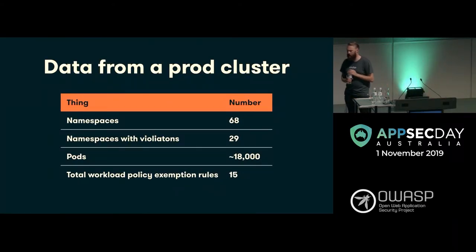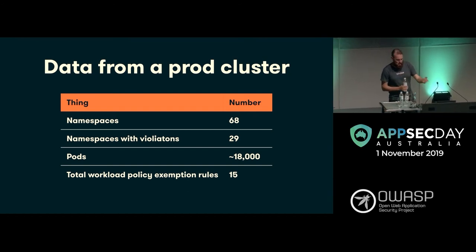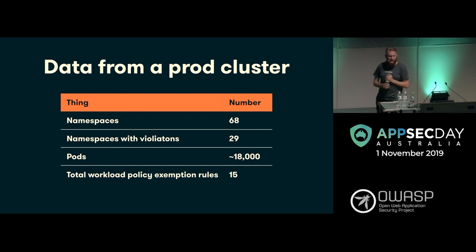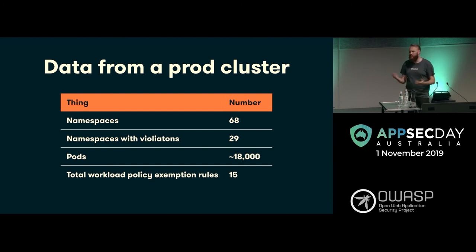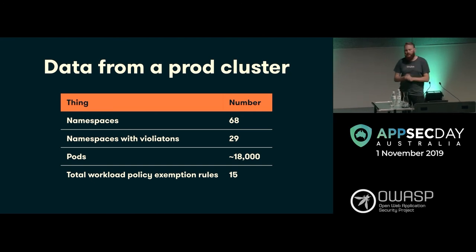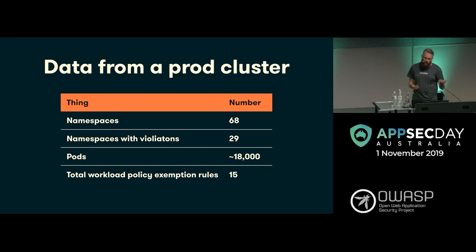How did we actually roll this out? Let's get some data from real production. We run this in production on all clusters at Cruise. Here's some actual data from a specific cluster: 68 namespaces, about half of them had violations based off our initial policies when we started. One of the challenges is the number of pods we're dealing with — 18,000 is a snapshot point in time; those 18,000 will change. If you ever did an audit and asked for a slice of what's happening right now, that would have changed because there are cron jobs, things moving at a very fast rate.